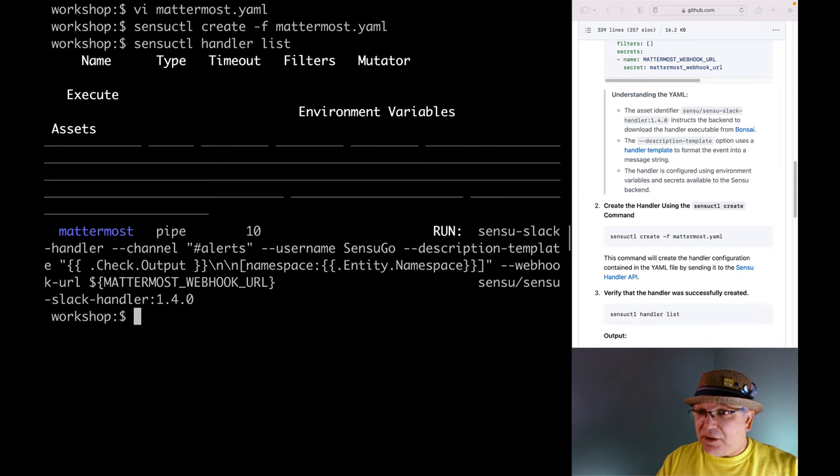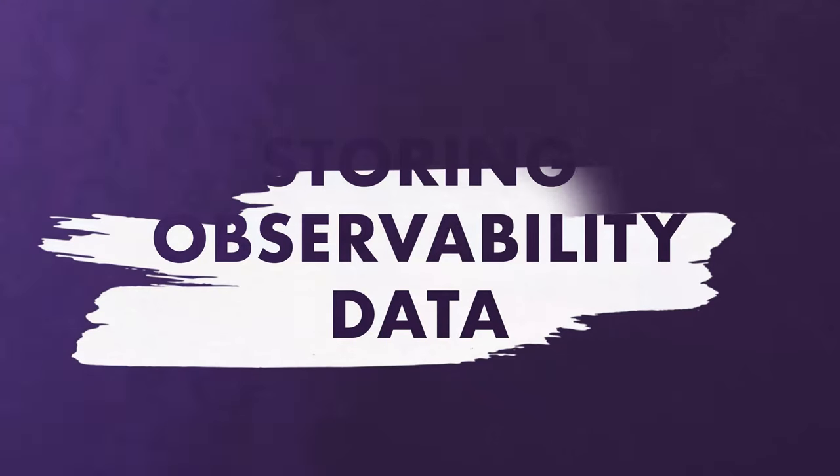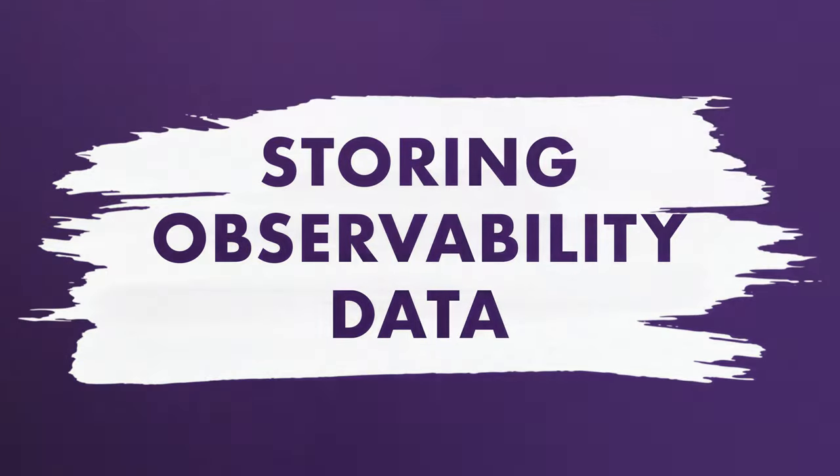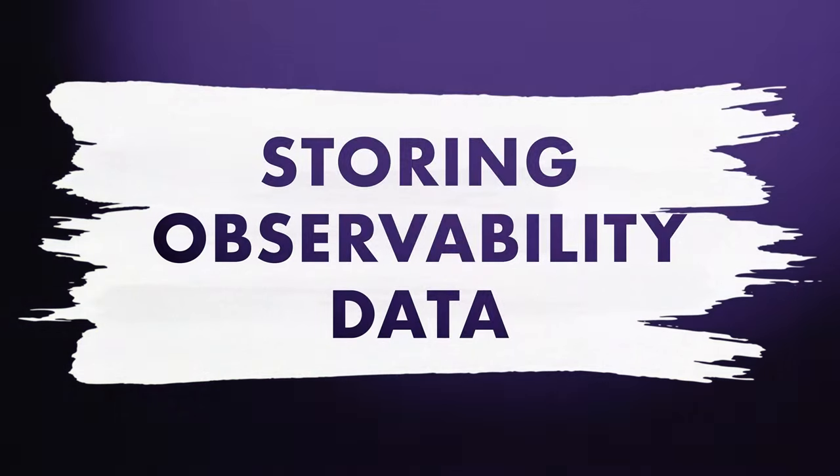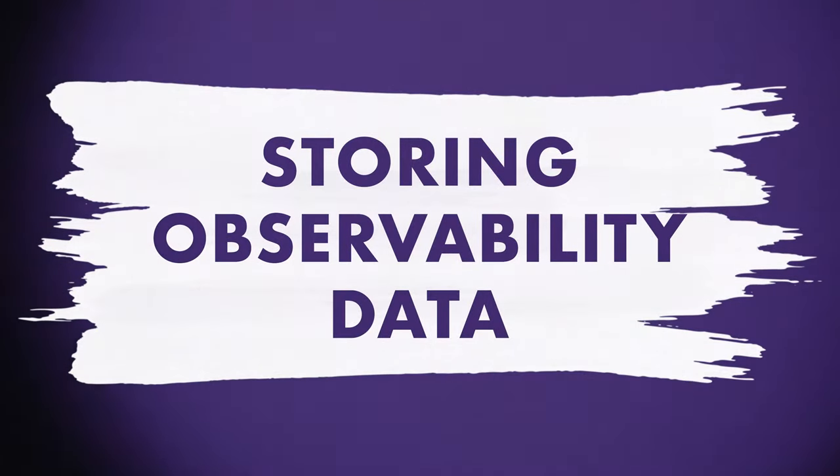Next, let's prepare a handler that can store metrics. Sensu is designed to be a pipeline for observability data but does not store the data long term. If you want to keep a historic record of the data, a handler can be used. This kind of handler will convert the incoming event into the required format and then send it to the database or service for storage.